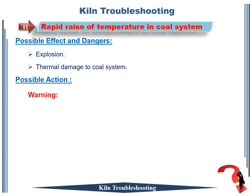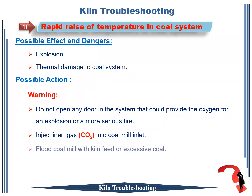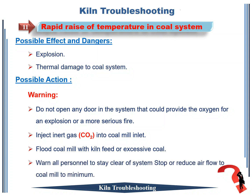Possible actions to take in this case. WARNING: 1. Do not open any door in the system — that could provide oxygen for an explosion or a more serious fire. 2. Inject inert gas into coal mill inlet. 3. Flood coal mill with kiln feed or excessive coal. 4. Warn all personnel to stay clear of system. 5. Stop or reduce air flow to coal mill to minimum.